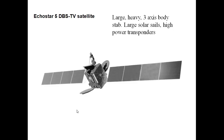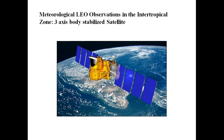The EcoStar 5 DBS-TV satellite is a large, heavy three-axis body stabilized satellite with large solar panels and high power transponders. Three-axis stabilization is more accurate in attitude control and positioning than spin stabilized satellites. In applications where pinpoint accuracy is required — such as meteorological observation in the intertropical zone — a three-axis stabilization system is used. The attitude control of a three-axis stabilization system demands an increase or decrease in the speed of the inertial wheels. If the system torque is constant, a continuous increase or decrease in the speed of the momentum wheels is required to maintain the correct attitude of the satellite.